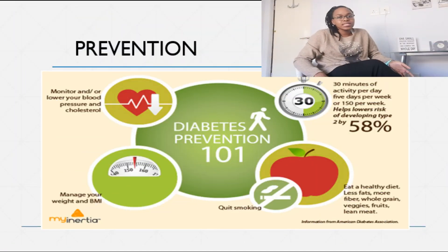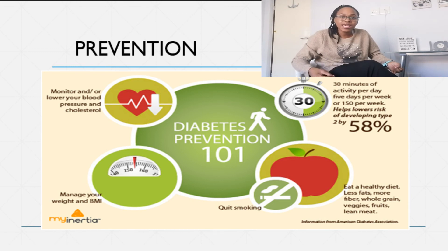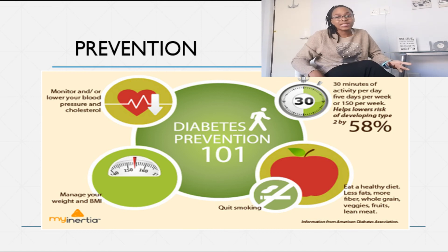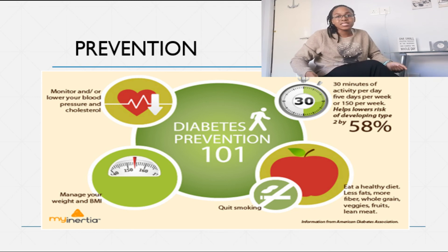Prevention is very similar to management in that you want to monitor your blood glucose levels quite regularly, especially if they're high and you've started to change your lifestyle. You want to keep a healthy lifestyle by eating healthy as much as possible, as well as exercising and getting your aerobic activity in as much as you can each week. Also, you want to check your weight and make sure it is not too high, as obesity can also lead to other metabolic changes such as diabetes, which will be discussed in the obesity lecture.